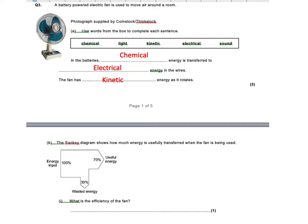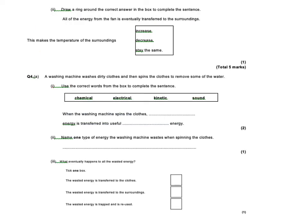The Sankey diagram shows how much energy is used for the transferred. How efficient is it? That's the 70% because that's the useful part that we want. And then when we move on, so we've got to draw a ring around the correct answer. So all of the energy from the fan is eventually transferred into the surroundings. This makes the temperature of the surroundings increase. So any time we lose energy by heat, the surroundings are gaining energy. They're gaining that energy from the appliance or whatever. That system is using energy.